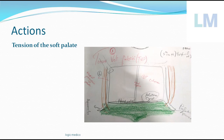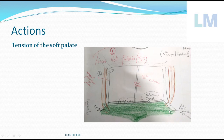Tensor veli palatini also ensures that voice coming from the larynx does not enter the nasal cavity — certain speech sounds should not be nasal. If the soft palate is short or the pharynx is too wide, due to pharyngeal surgery or other causes, this is called velopharyngeal incompetence, meaning the soft palate is not competent enough to close the pharynx. In that case, speech comes through the nasal cavity, and the patient will have hypernasality — a hyper-nasal speech quality.